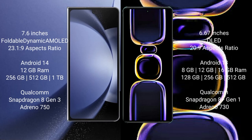Samsung Galaxy Z Fold 6 comes with a 7.6-inch foldable Dynamic AMOLED display and a 6.0:23.1:9 aspect ratio. Xiaomi K60 features a 6.67-inch AMOLED display with a 6.0:23:9 aspect ratio.